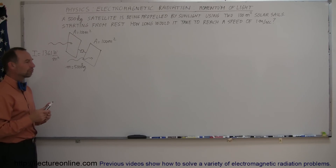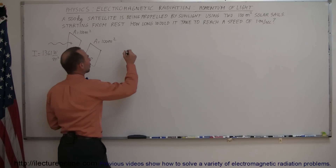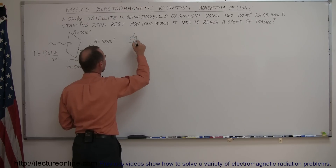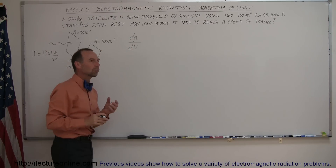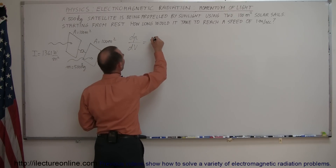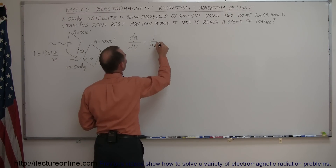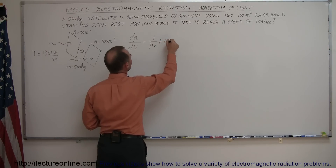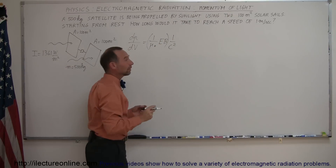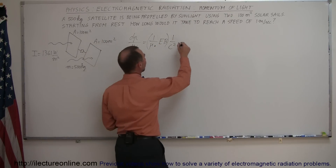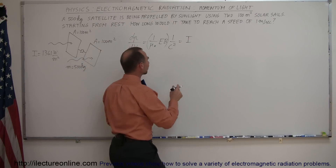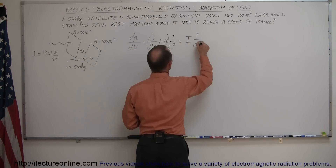We're going to need the equation for momentum. The change of momentum per unit volume is equal to one over mu-naught times E times B times one over c squared. You should recognize this portion as being the intensity of the light. So this can be written as the intensity of the light — also known as the magnitude of the Poynting vector — times one over c squared.